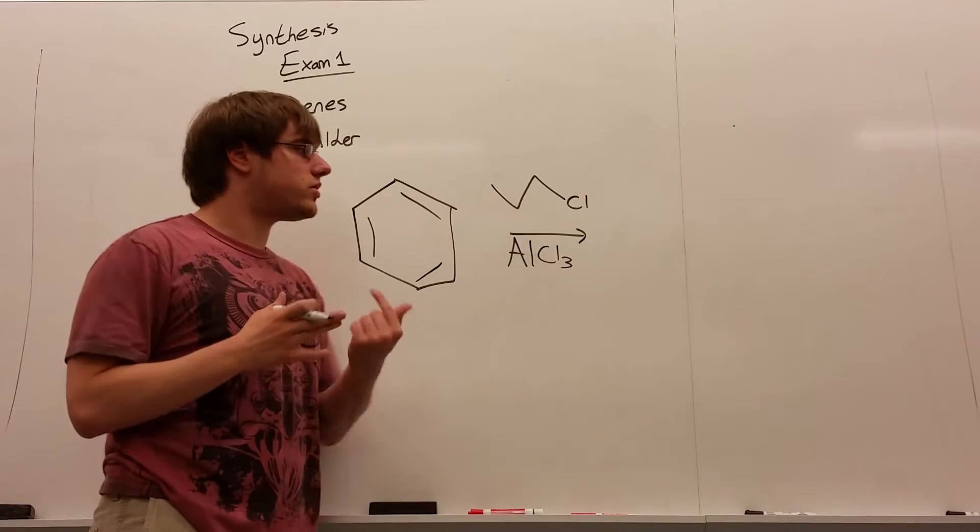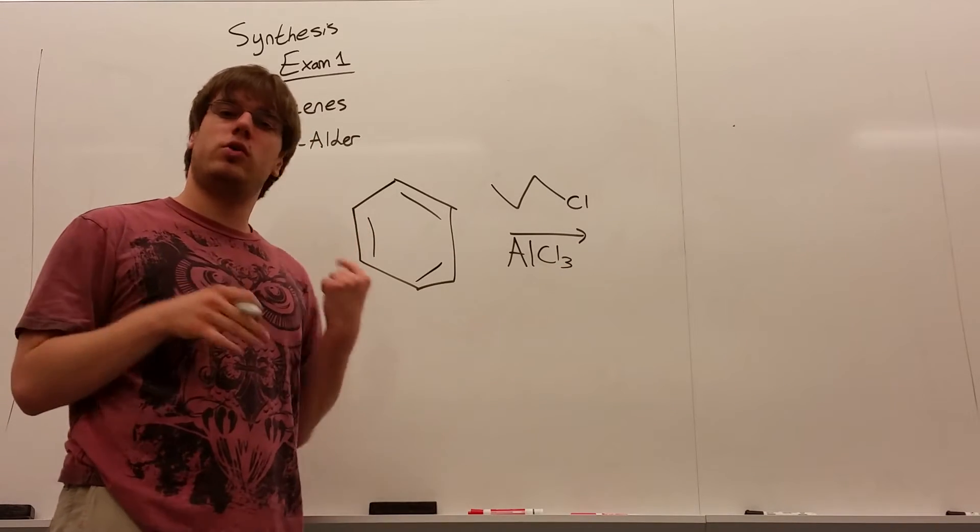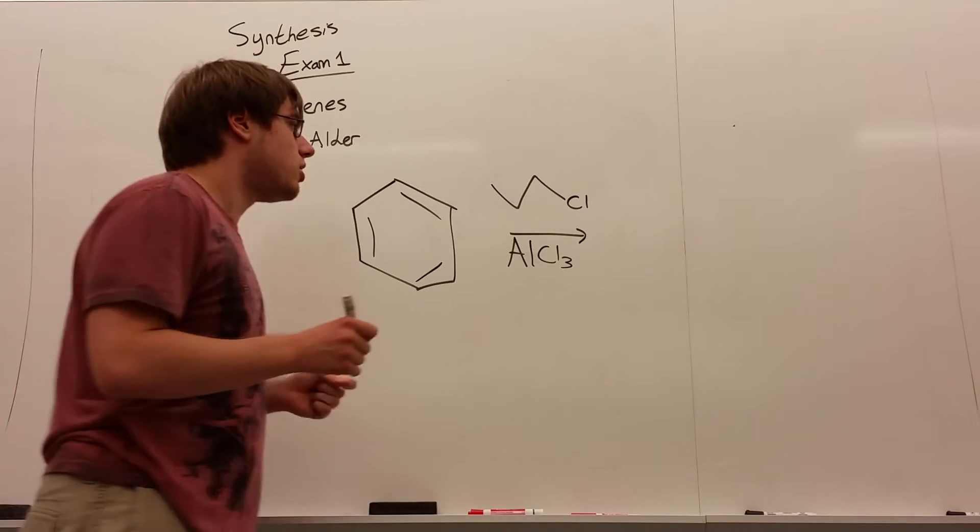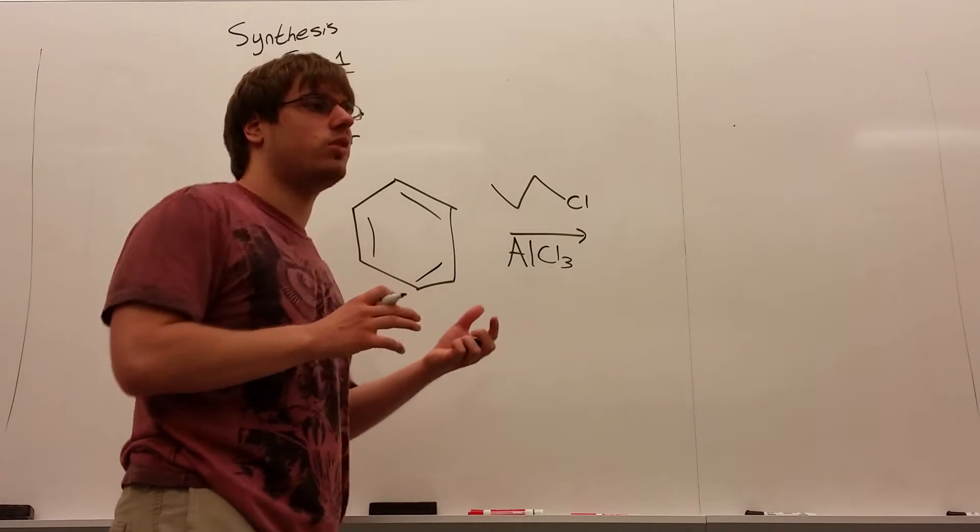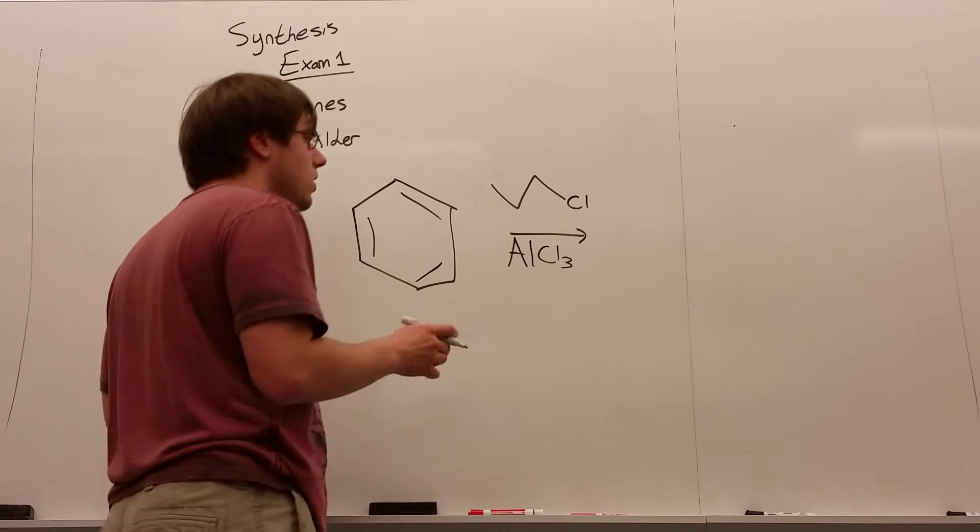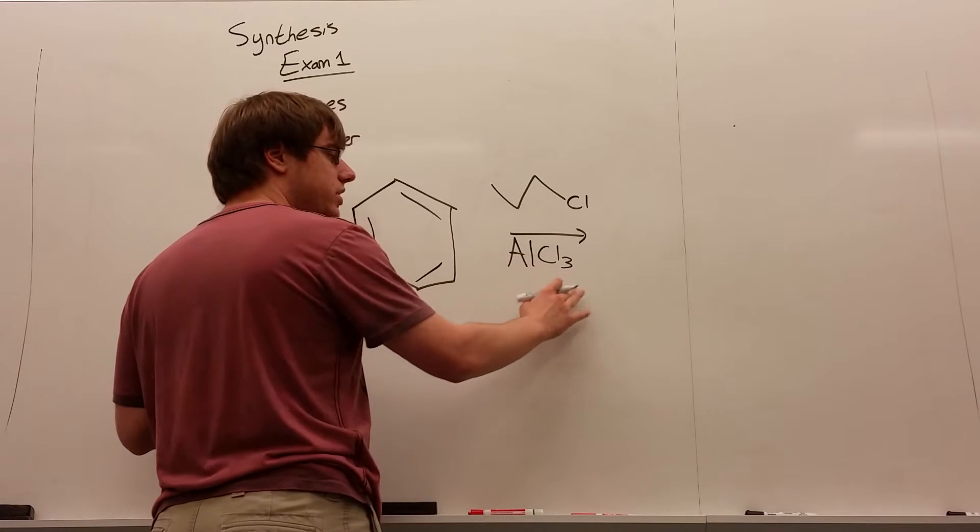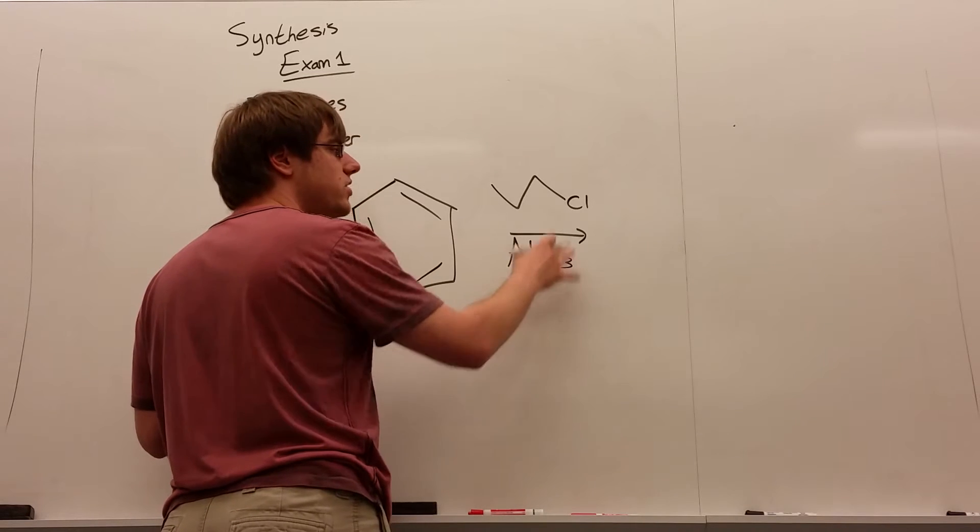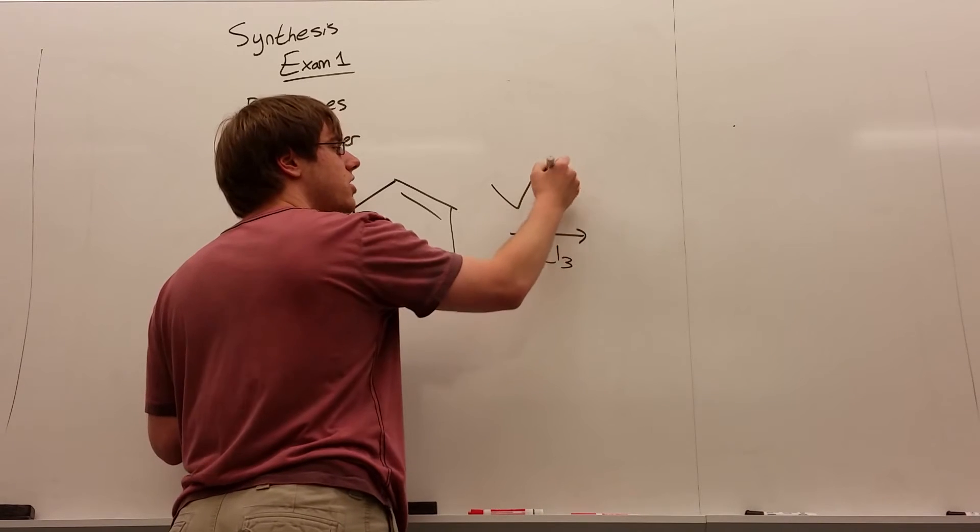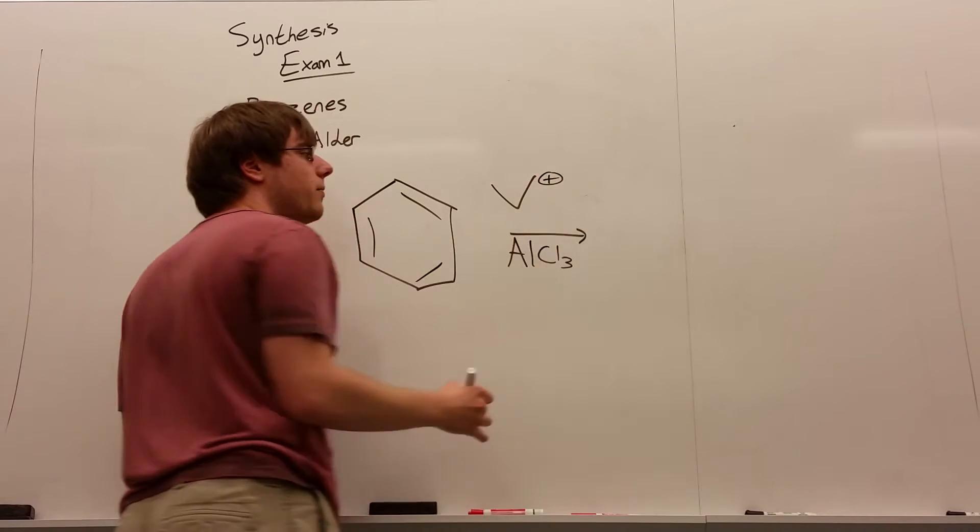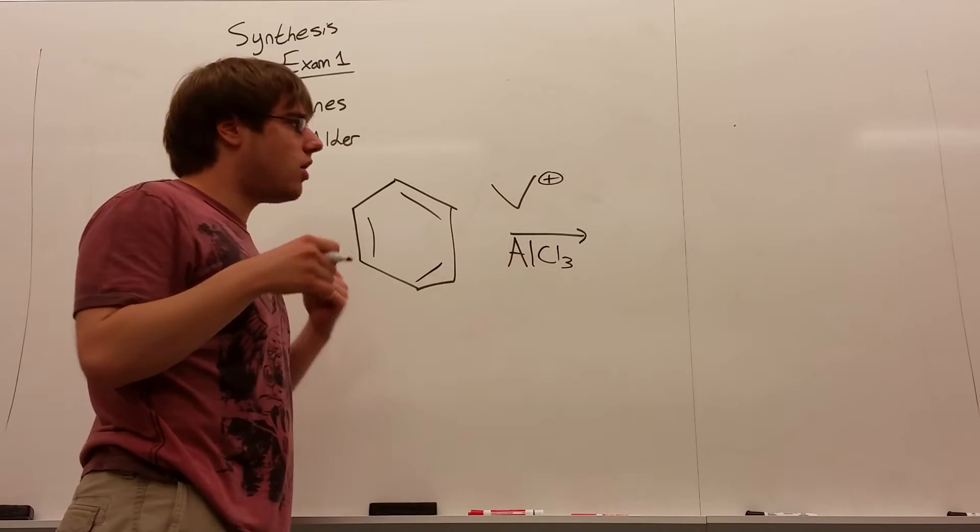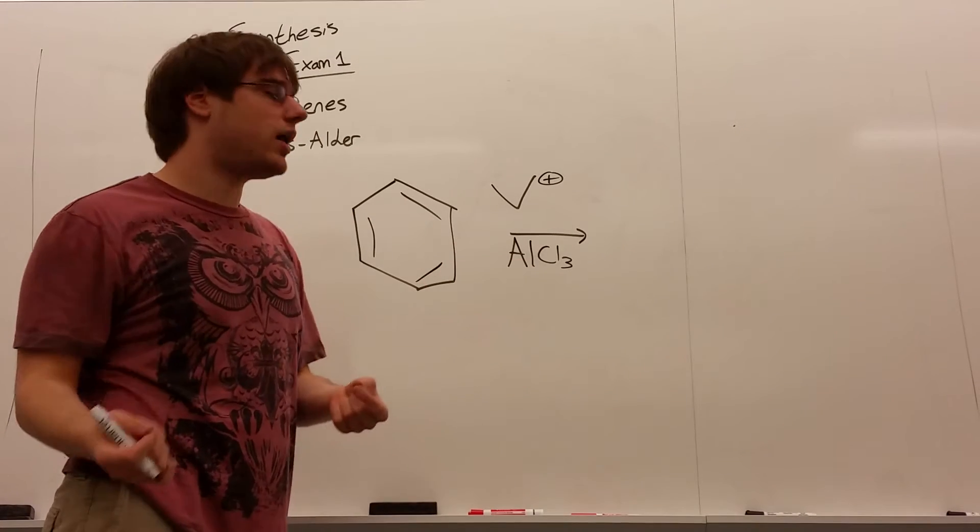Now, if this were a synthesis problem and you were free to choose what you wanted to add to the benzene, I would say don't use this reaction because it has a very important kind of intermediate that happens. What this AlCl3 does is it's called a Lewis acid, and all it does is it ends up pulling off the chlorine. And what that does is it leaves a carbocation on the carbon over there.